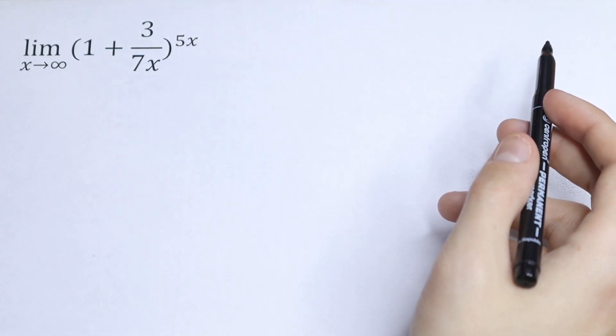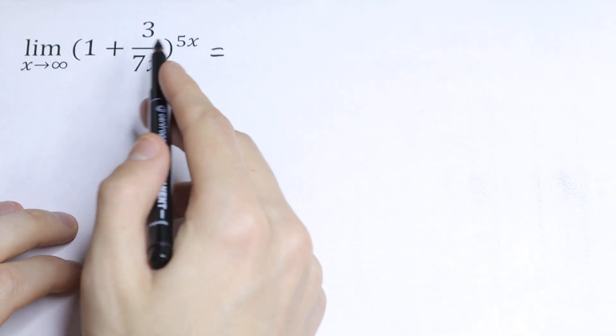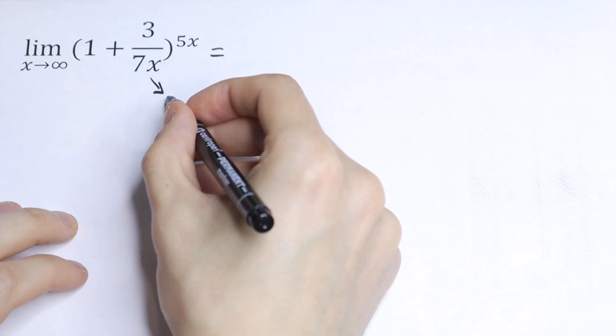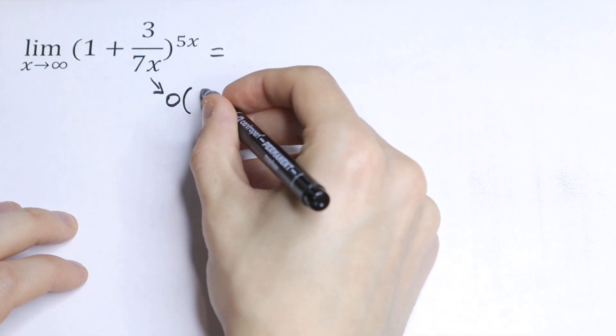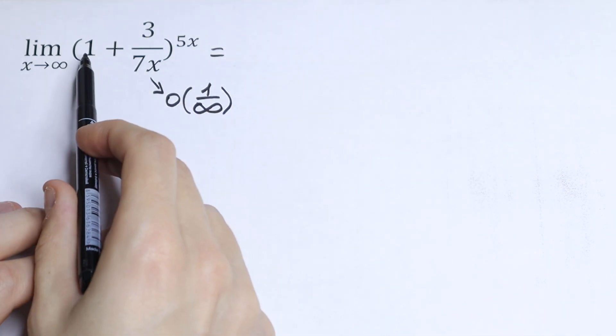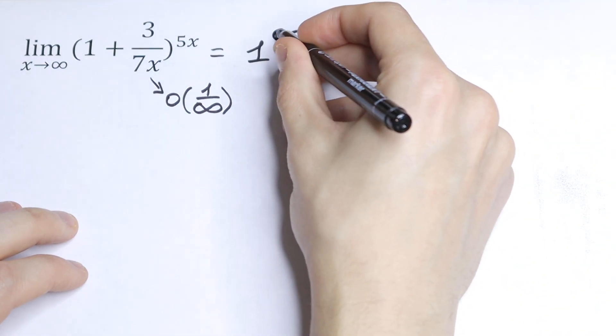One way is to use direct substitution. So let's do this at first, we will have an interesting case because we know that this 3 over 7x goes to 0, because we have 1 over infinity. So it goes to 0. As a result, we'll have 1 plus 0 to the power of infinity. We have 1 to the power of infinity.